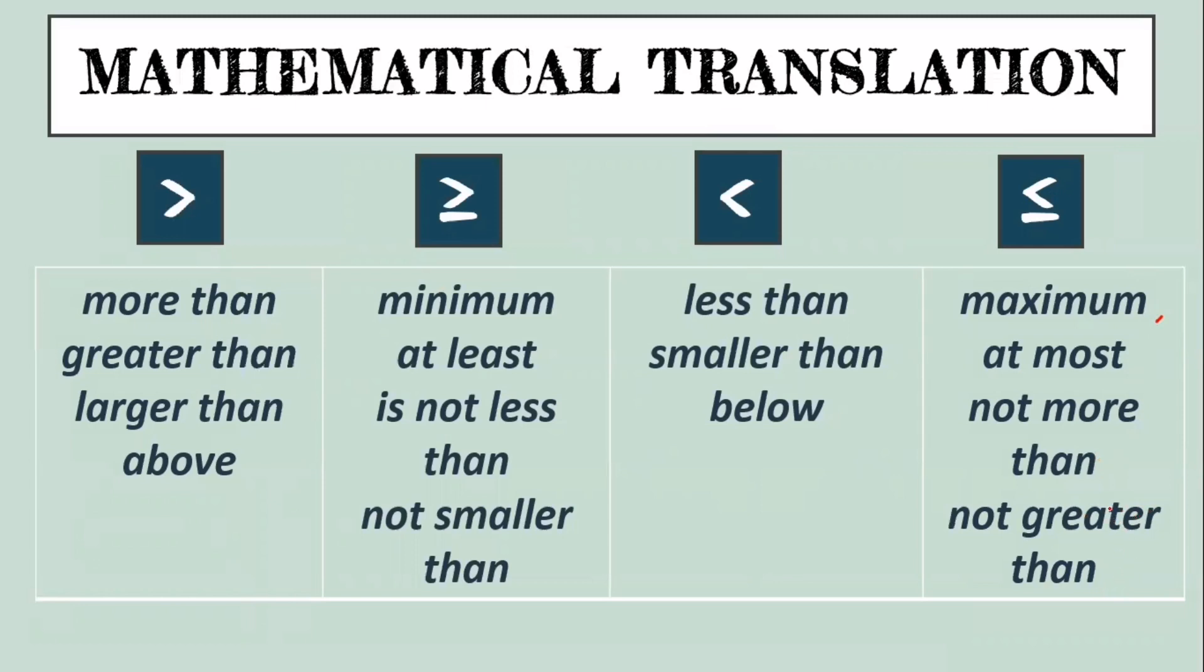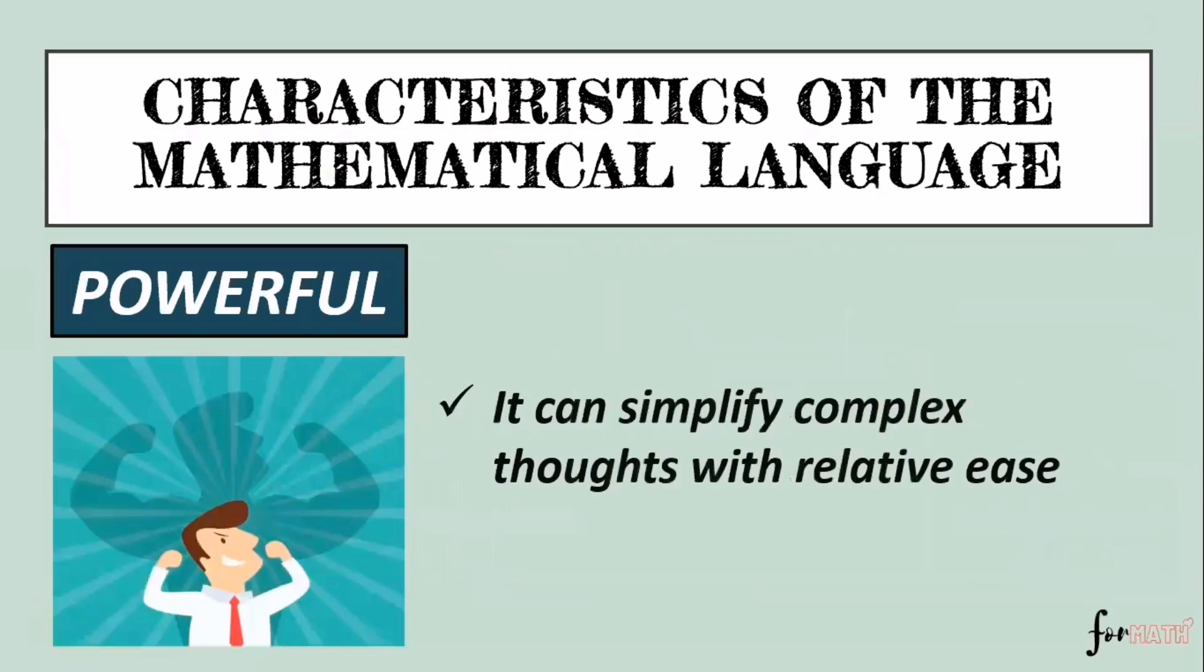Next is mathematical language is powerful. It can simplify complex thoughts with relative ease. We can express complex thoughts through formula. Example, in physics, if you want to quantitatively describe the motion of an object, or how far does an object will reach in three seconds, or how much work is done, power or energy, how electricity works. All of that can be expressed using formula or equation. Therefore, mathematics is a language of science, business, economics, music, architecture, engineering, accountancy, arts, and even in politics.